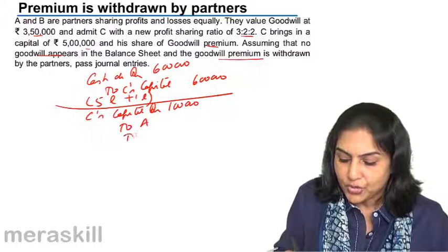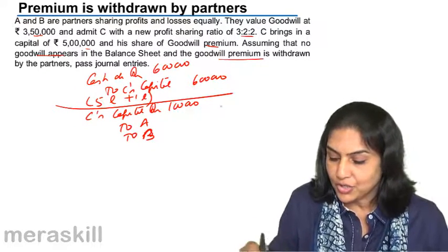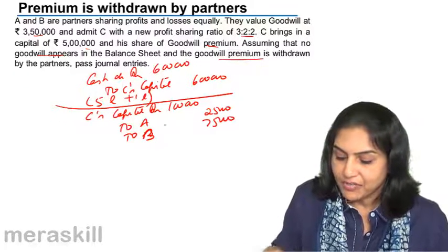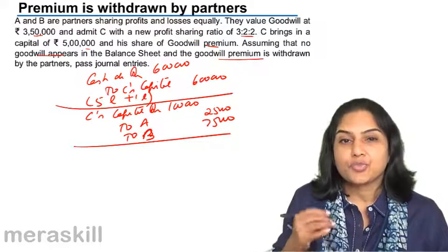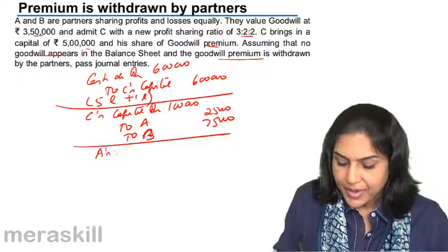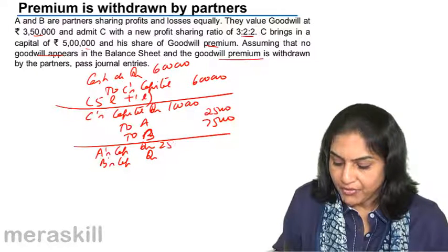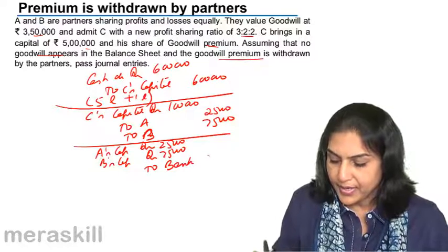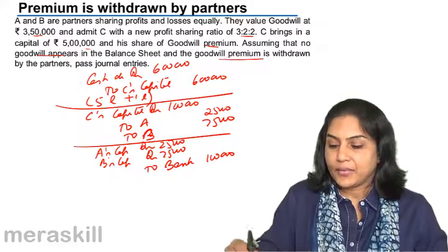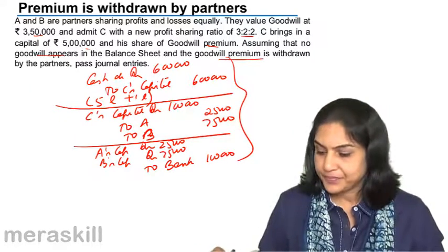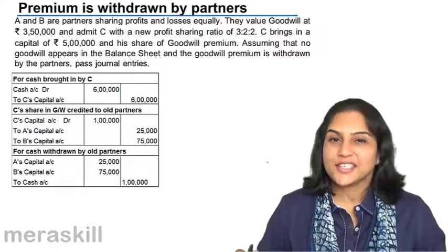For goodwill premium, we credit the old partners. C's Capital Account is debited 1 lakh — his share of goodwill — distributed to A and B in the sacrificing ratio of 1:3, giving 25,000 to A and 75,000 to B. The money is no longer retained in the business.